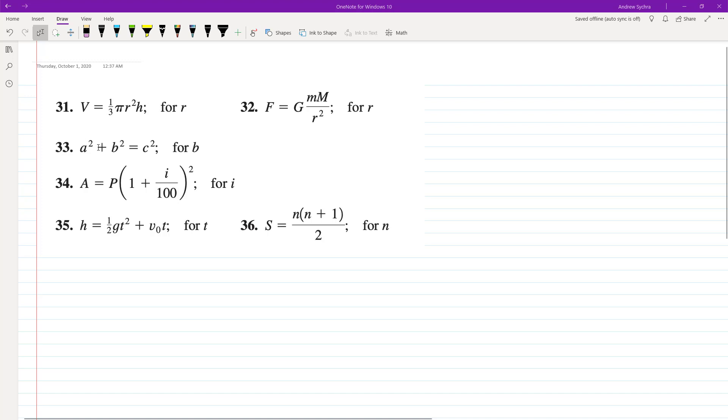So starting off with problem 31, solving for R. Divide through by everything on the right side, so we're left with R² = V divided by 1/3, which is 3 on top, times πH. Then just take the square root of that, and you end up with R = √(3V/πH).